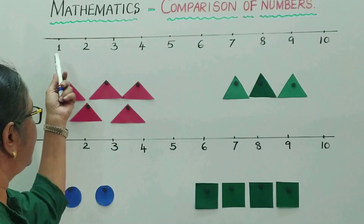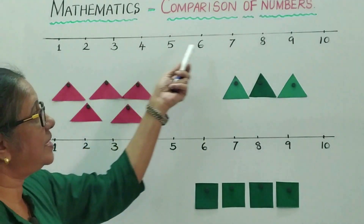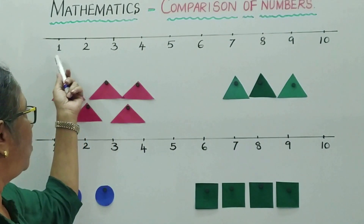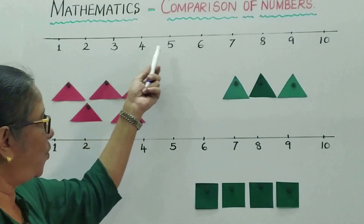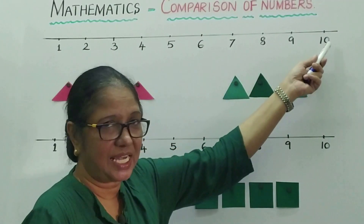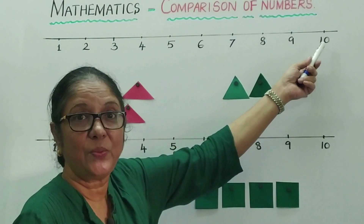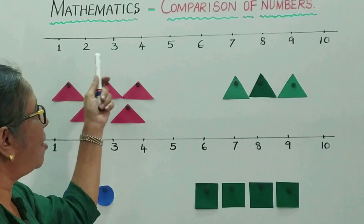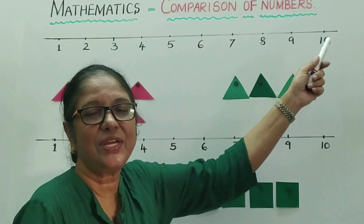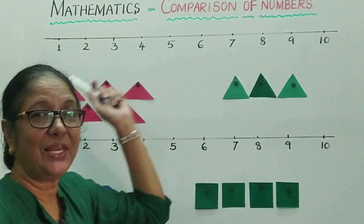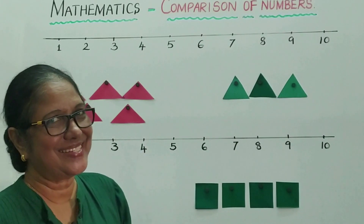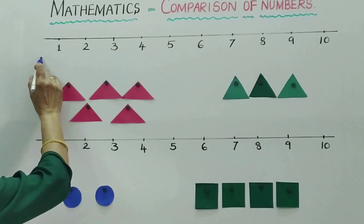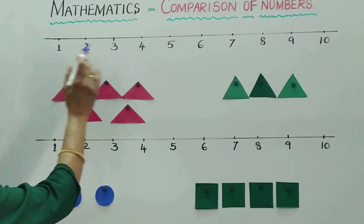The number value increases as the number goes up. For example: 1, 2, 3, 4, 5, 6, 7, 8, 9, 10. Number 10 has the greatest value. When you write numbers in order, the value of the number increases.